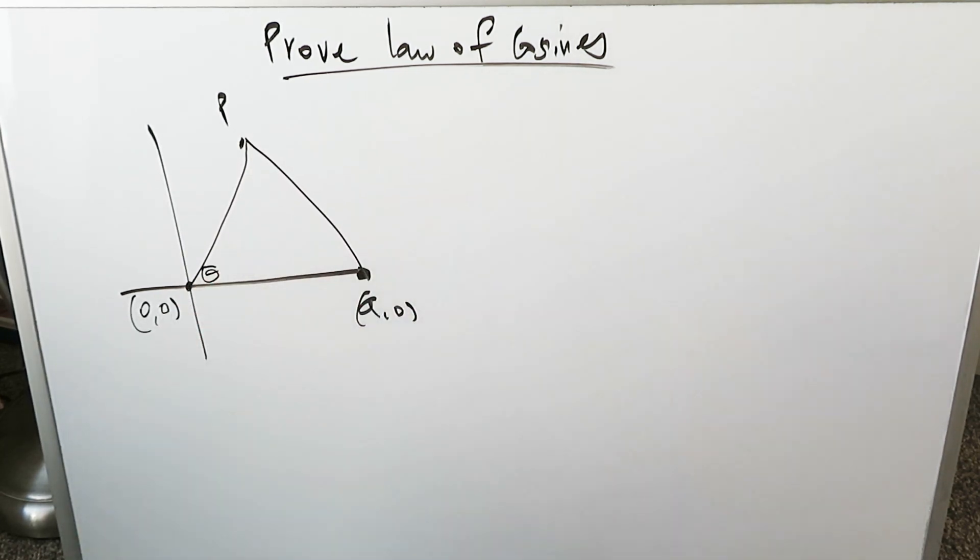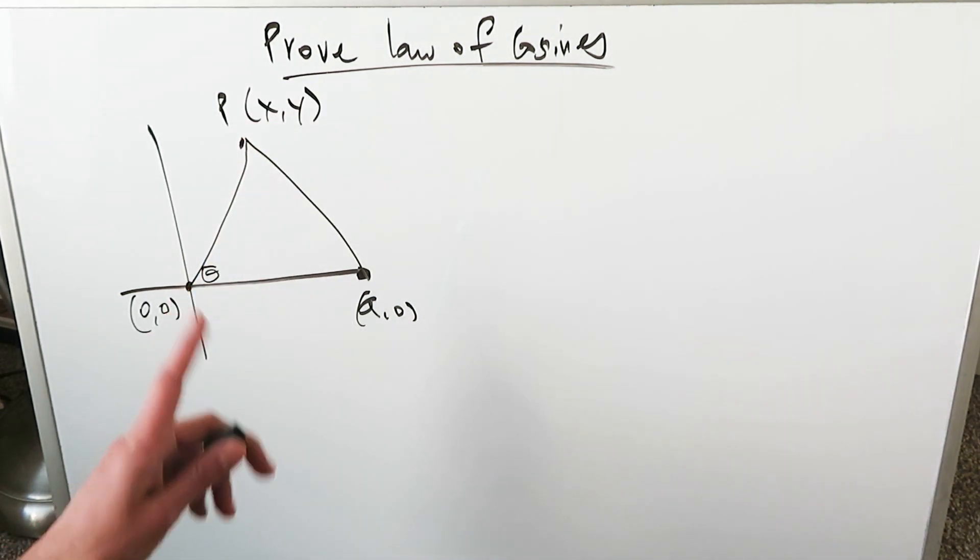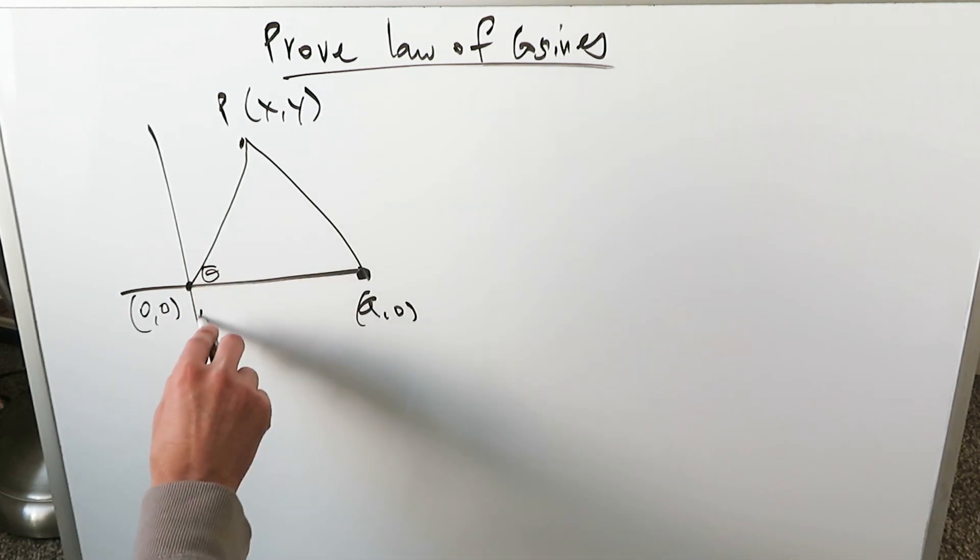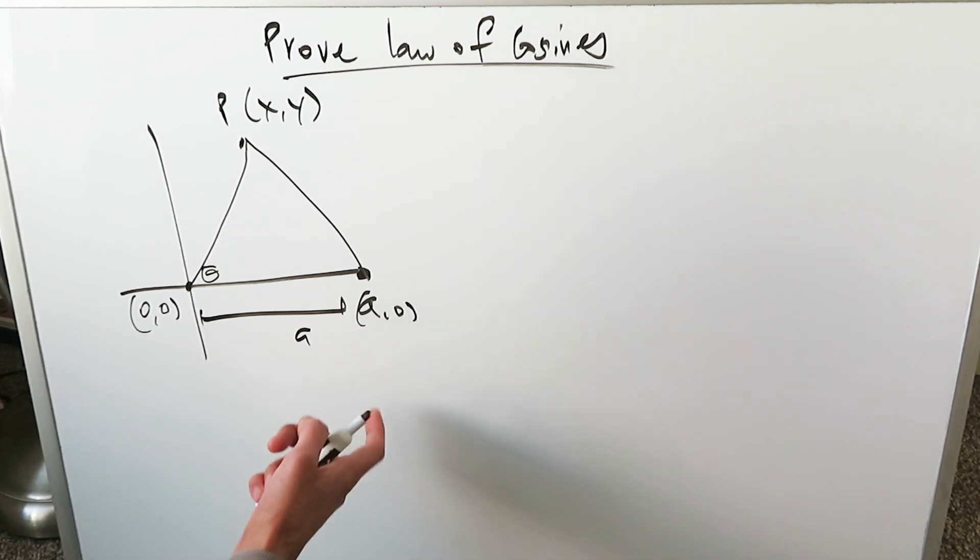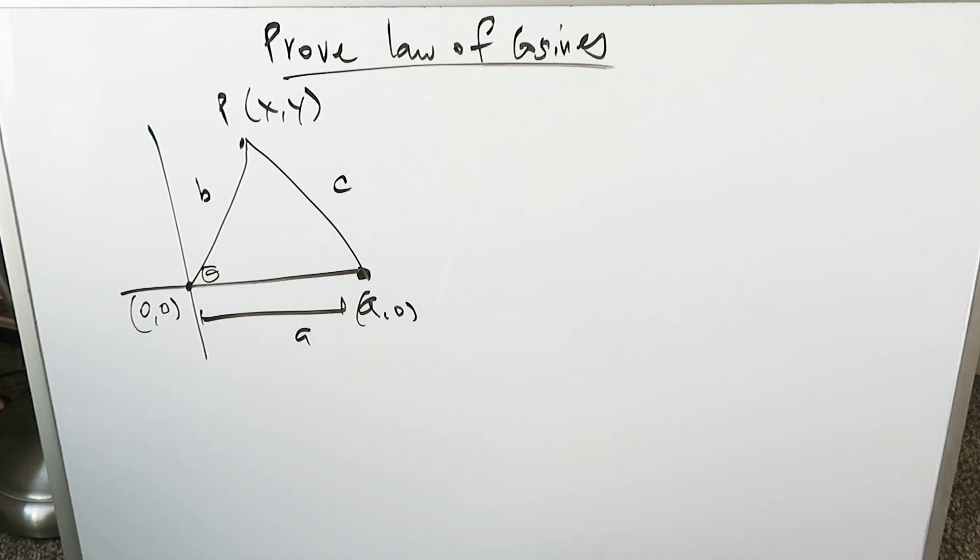Here's a certain angle, theta. That particular point P can be defined as a coordinate pair representing a certain x and y value. From 0 to A, this is your A side. This would be your C side. This here would be your B side.